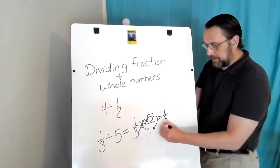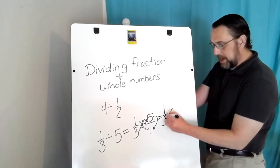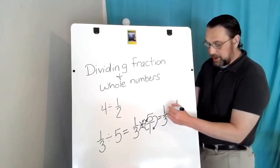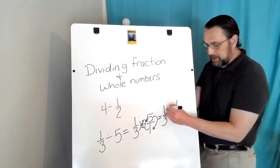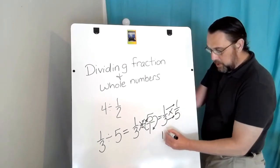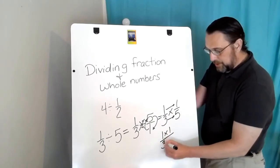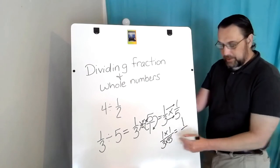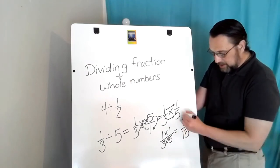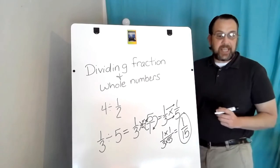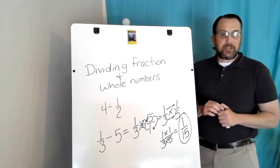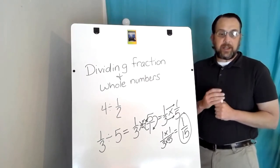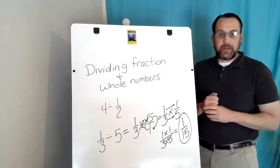I will change the operation to multiplication and rewrite my new problem: one over three times one over five. When we multiply fractions, we multiply straight across: one times one over three times five. One times one is one, three times five is fifteen, so my answer is one over fifteen, or one fifteenth. And ladies and gentlemen, that is today's lesson — dividing fractions by whole numbers and whole numbers by fractions. Good luck with the rest of your week, and let me know if you need help.